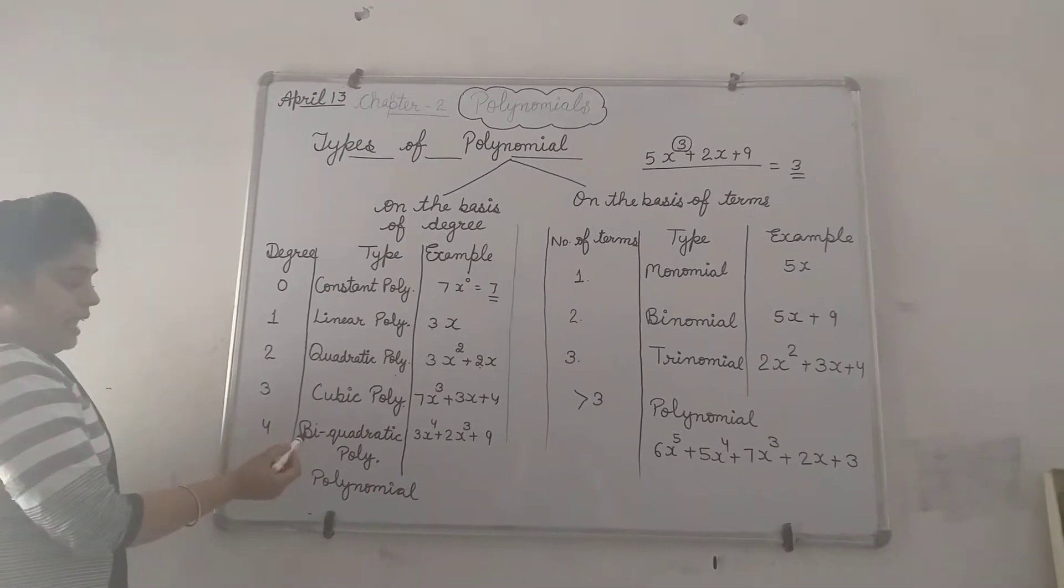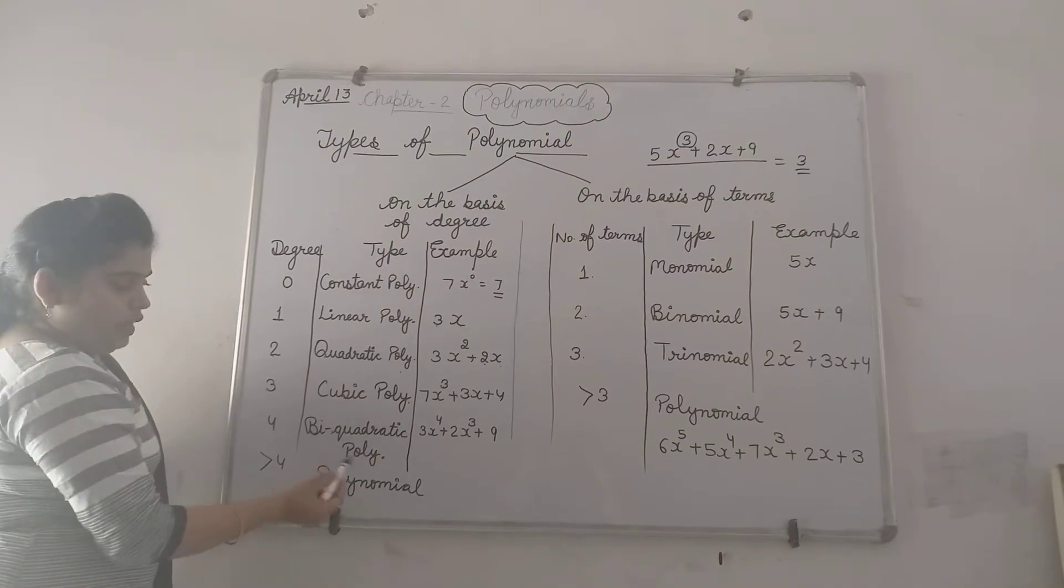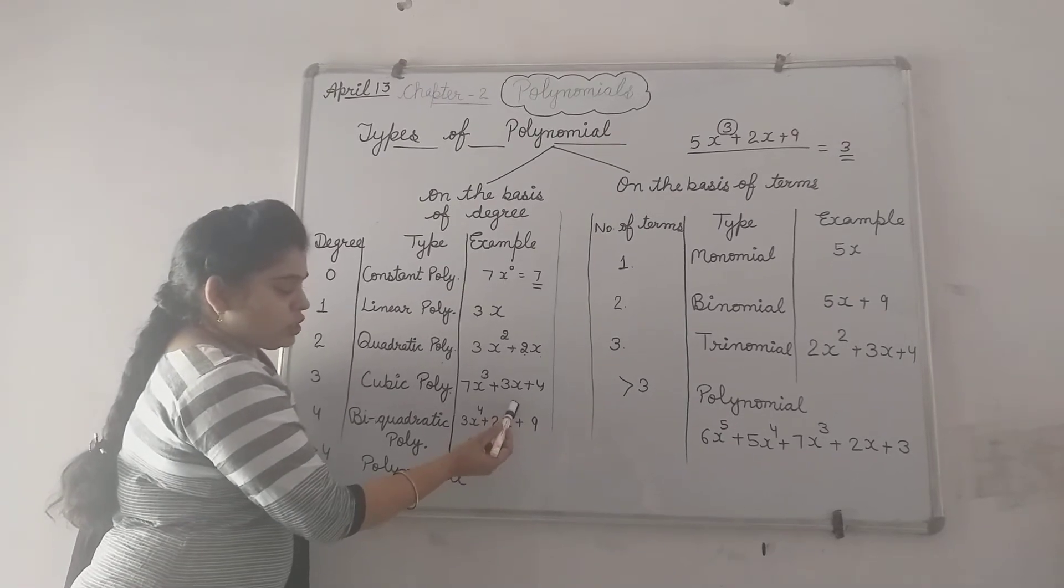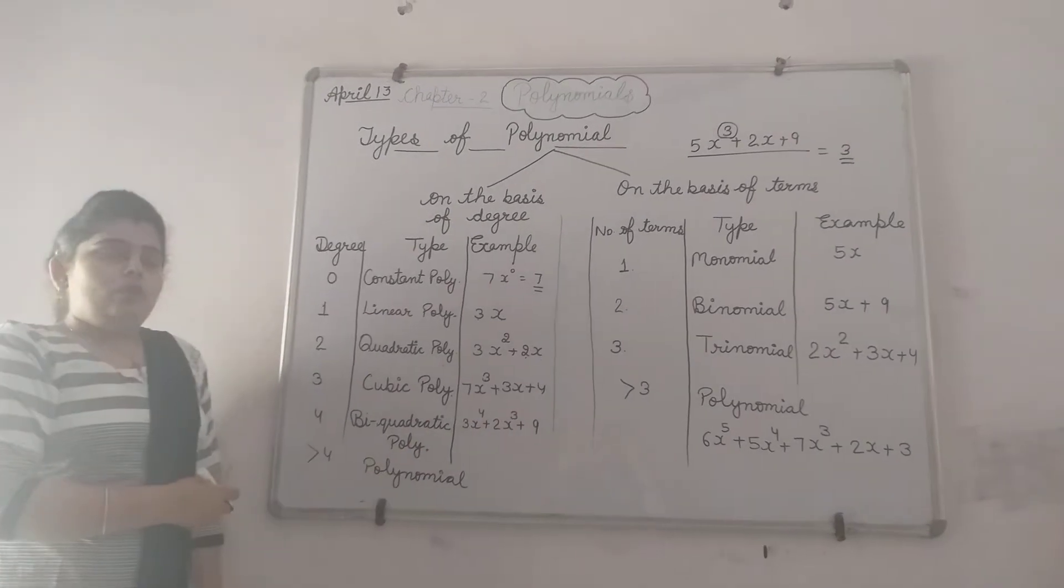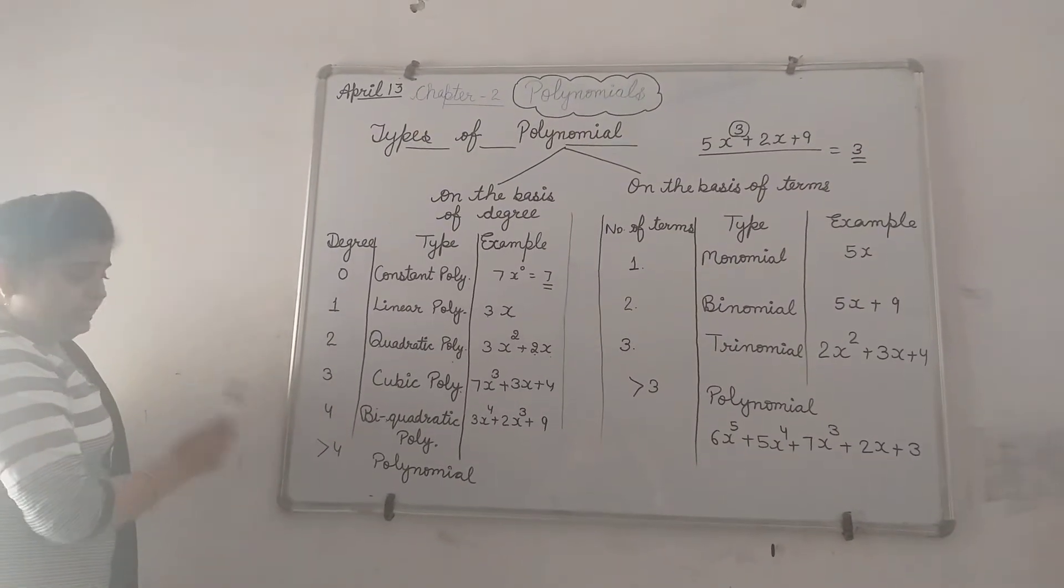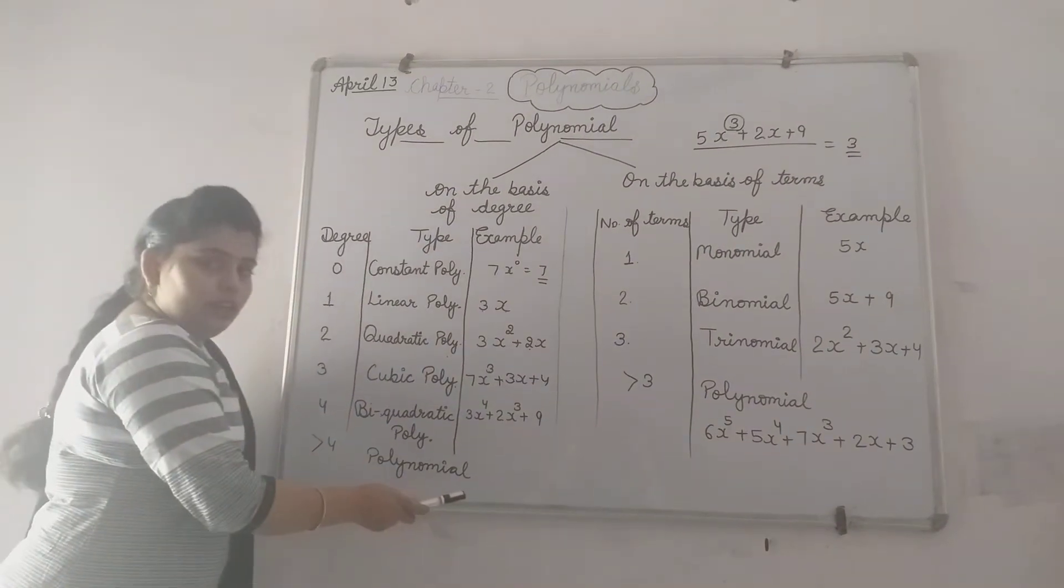If degree is 4 then it is called biquadratic polynomial. Example 5x to the power 4.